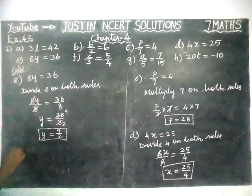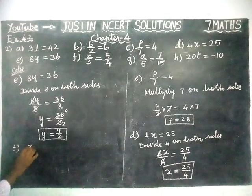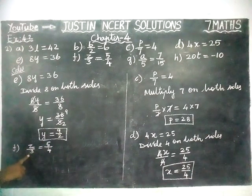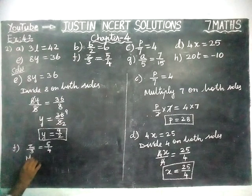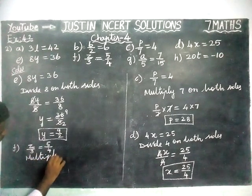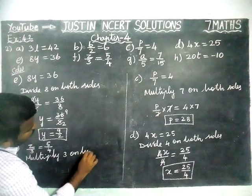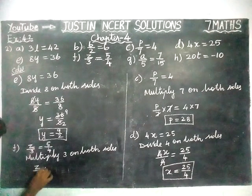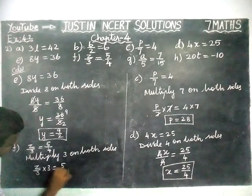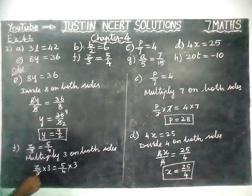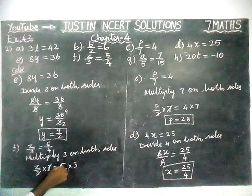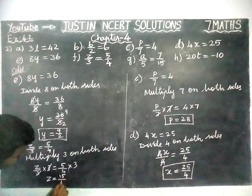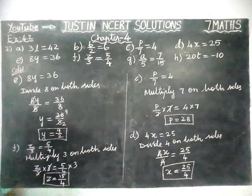Next, option F. Z by 3 is equal to 5 divided by 4. Here, we have to multiply 3 on both sides. Z by 3 into 3 is equal to 5 by 4 into 3. The 3s get cancelled. We cannot simplify further, so Z is equal to 15 divided by 4. The value of Z is equal to 15 divided by 4.